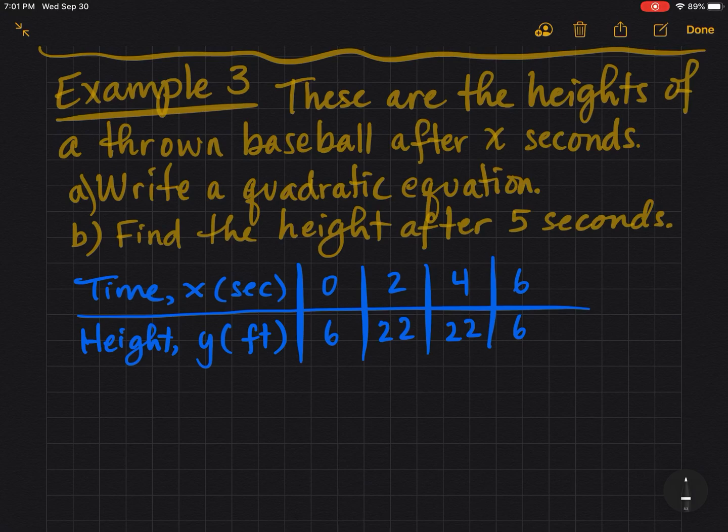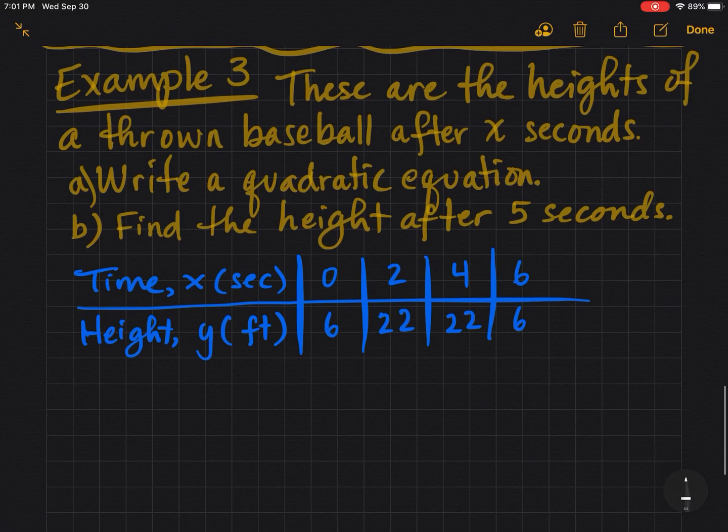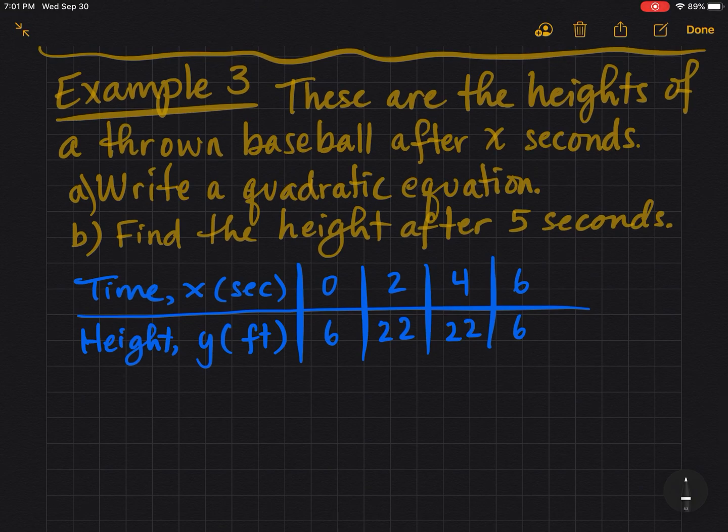Example 3: This is where all the math is going to start to come together. In algebra 1 you just get bits and pieces and get your skills together. In algebra 2 you'll start to see how to put the things together and see the big picture. These are the heights of a thrown baseball after x seconds. First of all, I'd like for you to write a quadratic equation based on these points, and then second I'd like for you to find the height of the baseball after 5 seconds.